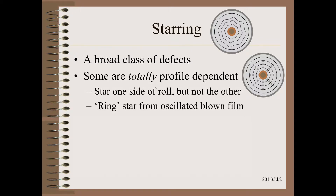Some types of starring are totally profile driven. Examples here include almost every star that shows up on one side of a roll but not the other side of that roll. Another example is oscillated blown film that will show as buckled rings on the sides of some rolls where low spots sweep past the edges.